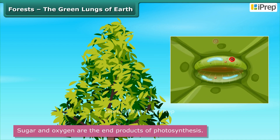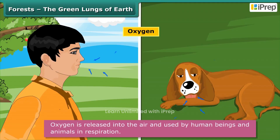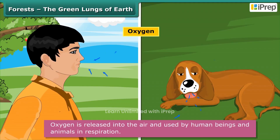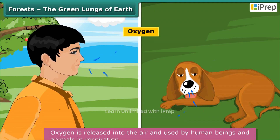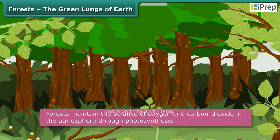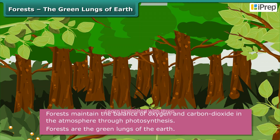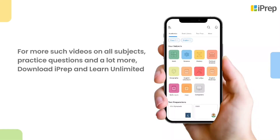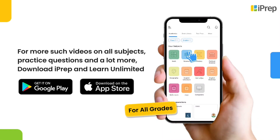Sugar is transported to the rest of the plant, and oxygen is released into the air and used by human beings and animals in respiration. That is why forests are called the green lungs of the Earth.